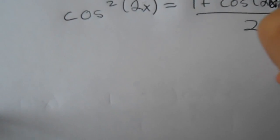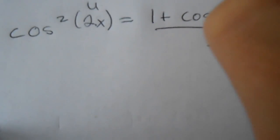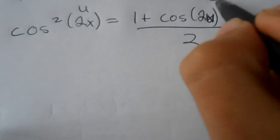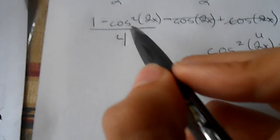So 2u, since this u is 2x, 2 times 2x would make 4x. So we plug this expression back into this expression.